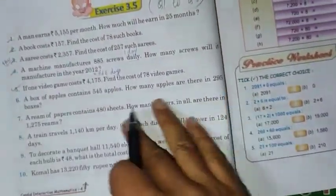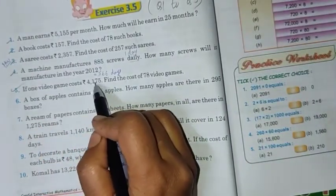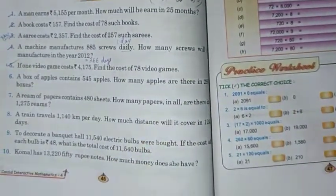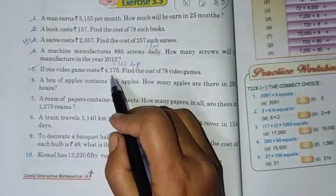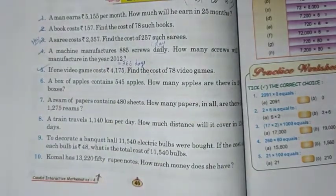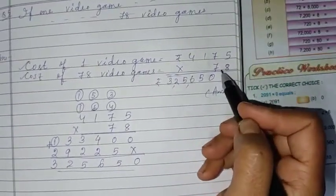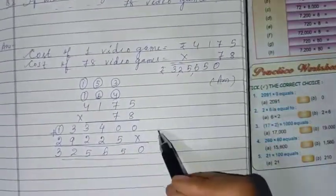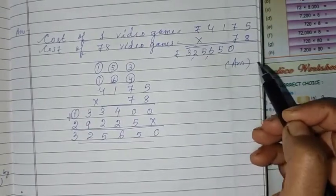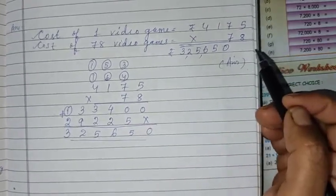Now move to the next question. This is also very simple for you. If one video game costs 4,175 rupees, find the cost of 78 such video games. So cost of 1 is given, cost of more asked. So simple statement: cost of 1 video game, then cost of 78 video games. Multiply, and do the multiplication here, because it is a long multiplication. You can't get enough space to write there. So do multiplication here, then write the answer. Understood, children?